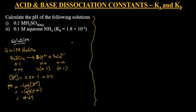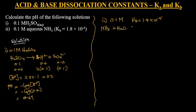Now let's deal with the weak base. NH3 is a weak base with a concentration of 0.1 molar, and we are given KB equal to 1.8 times 10 to the power minus 5. Because NH3 is a weak base, it dissociates partially in solution to produce OH- ions. The equation is: NH3 in water produces NH4+ — it accepts a proton from water — and produces OH- in solution.